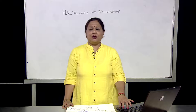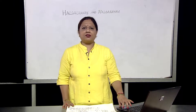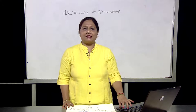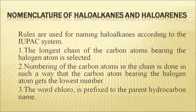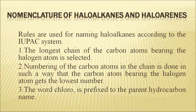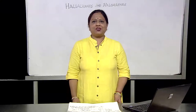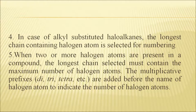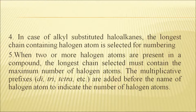The same naming rules from the previous chapter are followed for haloalkanes and haloarenes. The longest chain of carbon atoms bearing the halogen atom is selected. Numbering is done so that the carbon bearing the halogen gets the lowest number. The halogen name is prefixed to the parent hydrocarbon name. For multiple halogen atoms, multiplicative prefixes like di, tri, tetra are used.